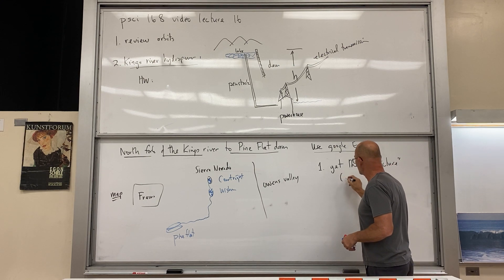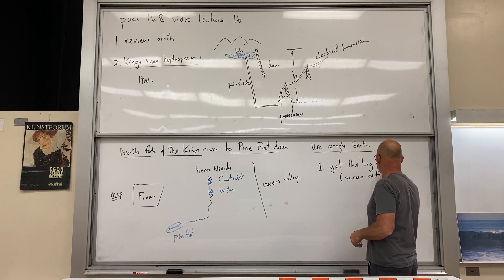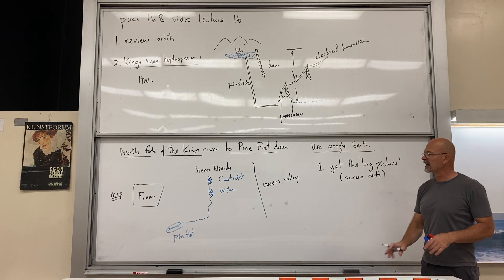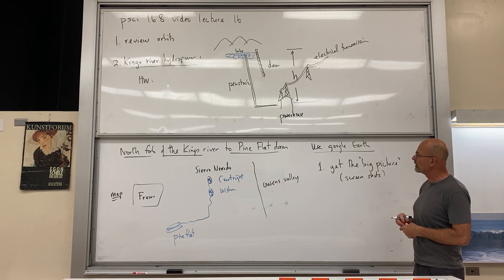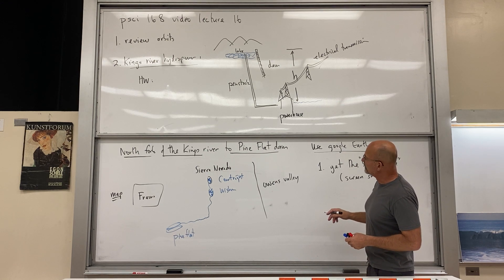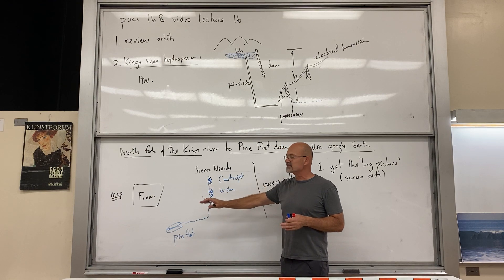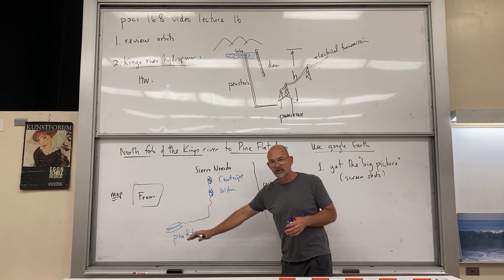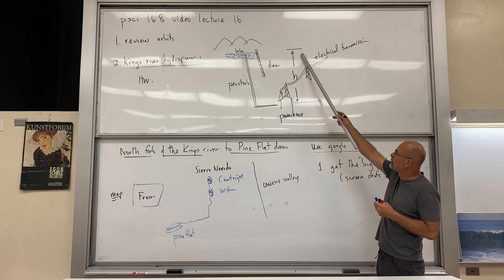And you can zoom in and out. You can tilt the picture so you have it in profile, and you want to get the big picture of where these reservoirs are with respect to Fresno. So the first thing you do is get the big picture, I'll just write it like that: picture. And then you want to get a screenshot or more. You get a lot of screenshots, print them out, and turn it into something nice.